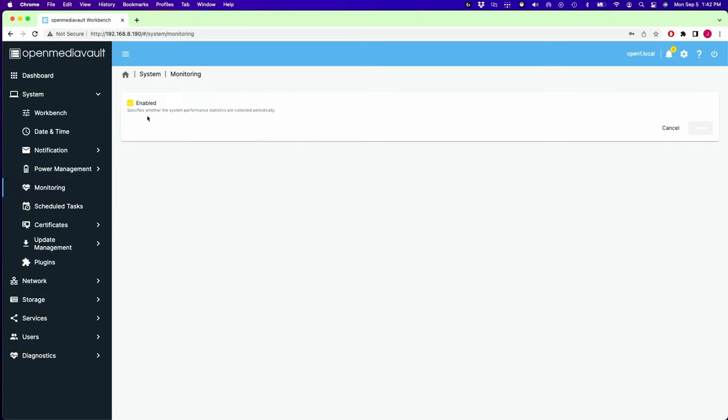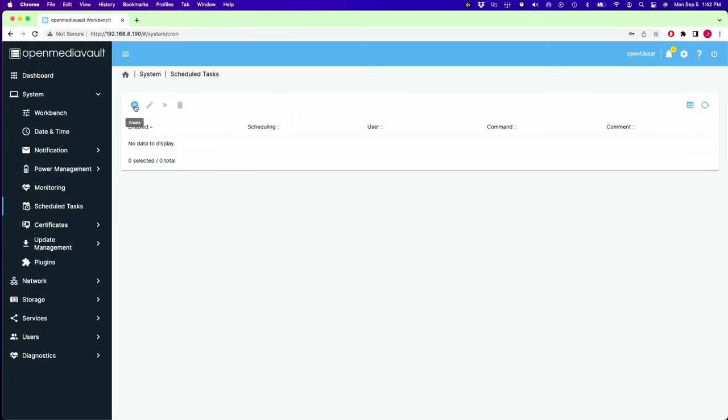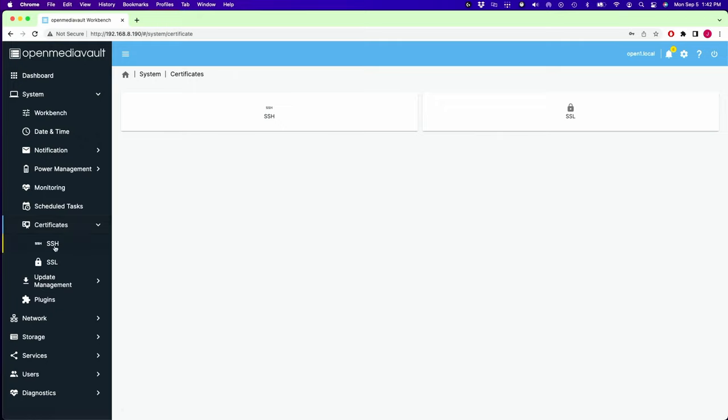Next is monitoring, and that's enabled by default. Schedule Tasks, then click Create. Schedule Tasks, we can run certain commands at different times that we want. Certificates, this is where we would put our SSH certificate or SSL certificate.